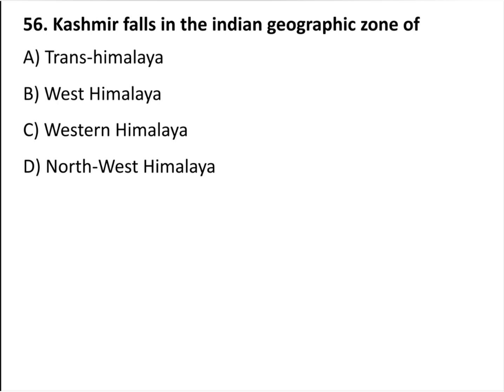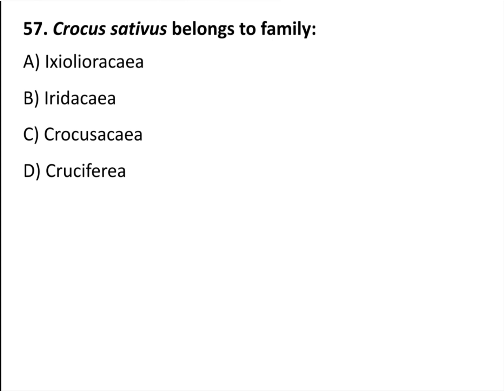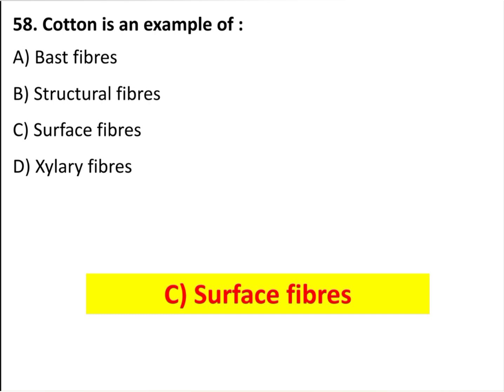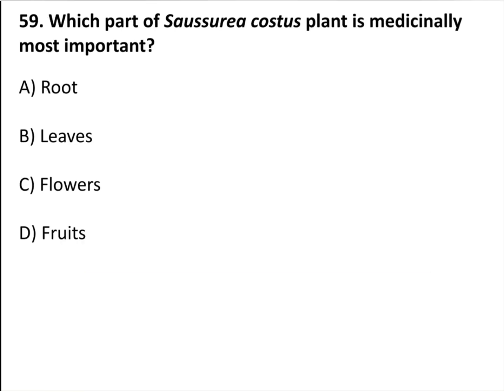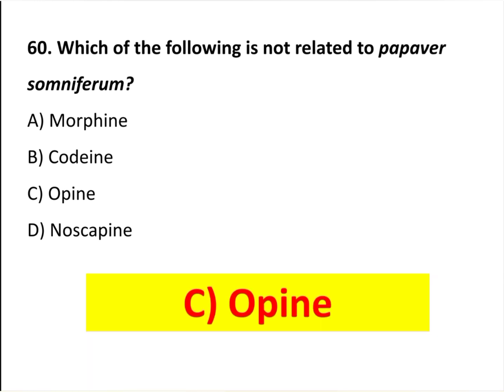Kashmir falls in the Indian geographic zone of Northwest Himalaya. Crocus sativus belongs to family Iridaceae. Cotton is an example of surface fibers. The root of Saussurea costus is the medicinally most important part. Which of the following is not related to Papaver somniferum? The answer is C part — opium.